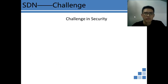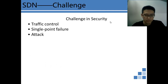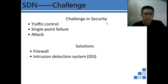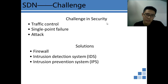There are also some challenges in SDN, especially in the security area, such as traffic control, single point failure, and attack. All these challenges exist in traditional networks too. In traditional networks, there are some solutions such as deploying security devices like firewalls, intrusion detection systems (IDS), and intrusion prevention systems (IPS). Usually, IPS is more popular than firewall or IDS because of its comprehensive ability of flexible detection and valid prevention.